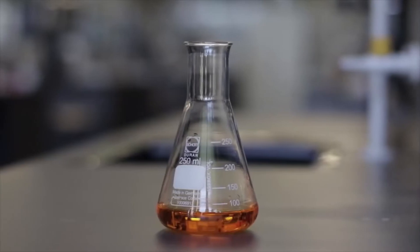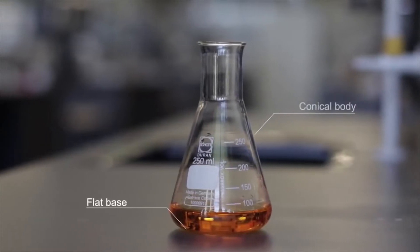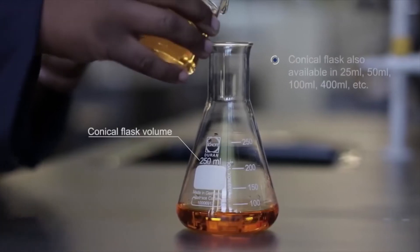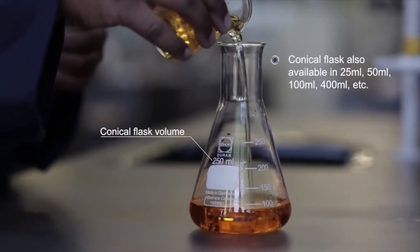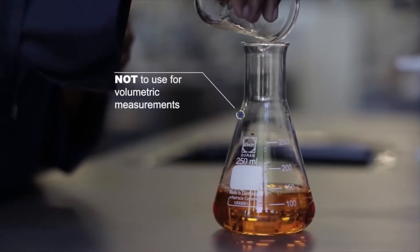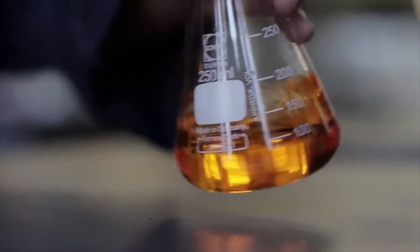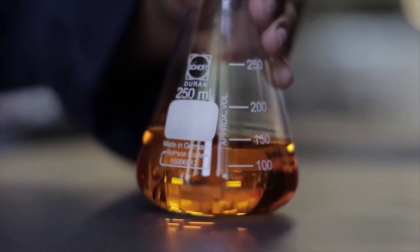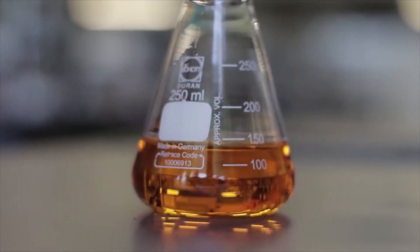It possesses a flat base, conical body and a cylindrical neck. A conical flask is found in different volumes. This glassware is also not for accurate volumetric measurements, but is used to mix contents by swirling without the risk of spillage. One example of its use is during a titration.